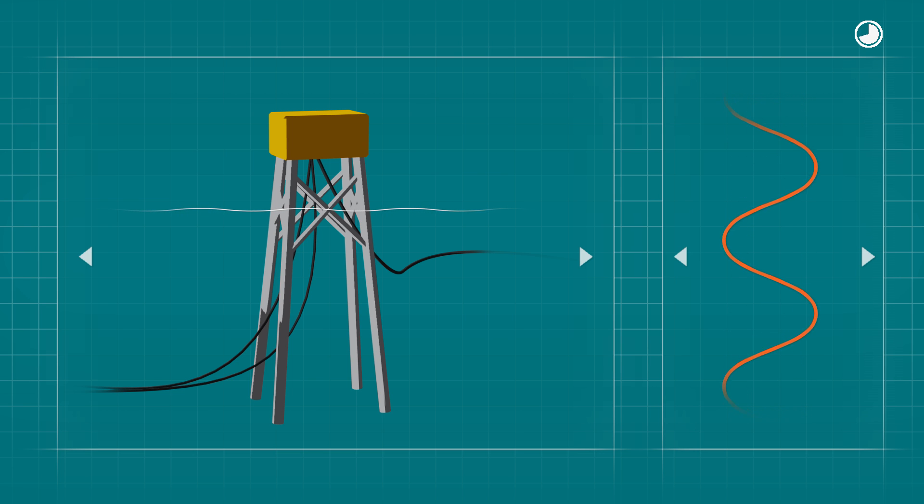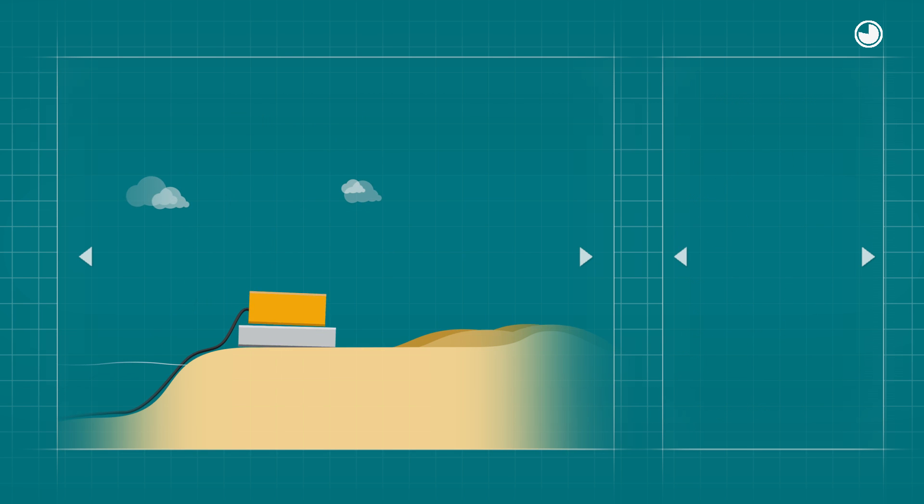At this substation the voltage amps up even more to minimize transmission losses. Finally, it is then transmitted into the mainland power grid.